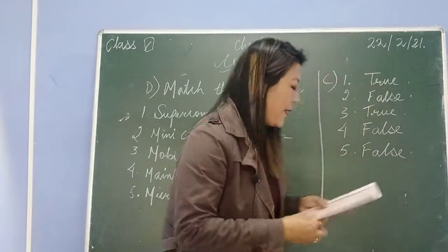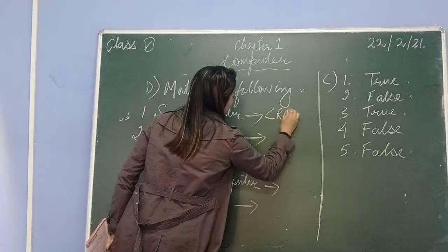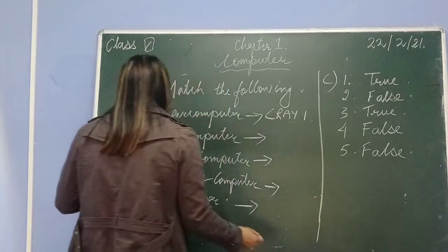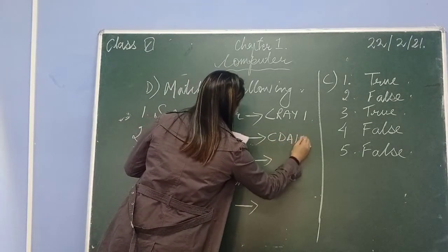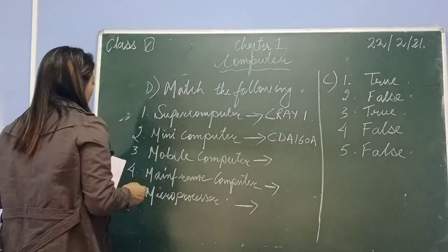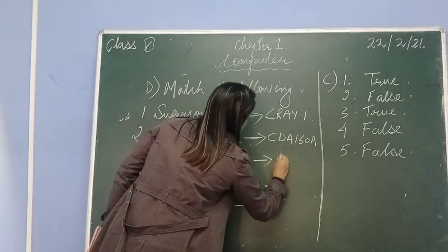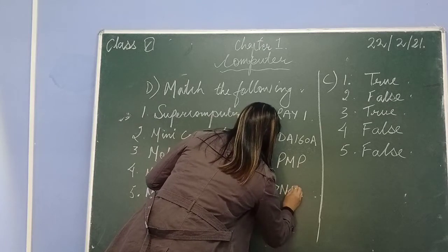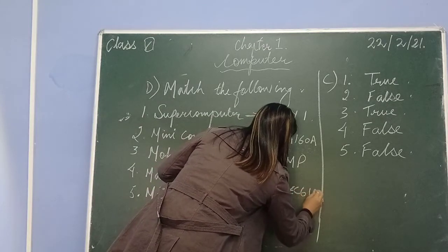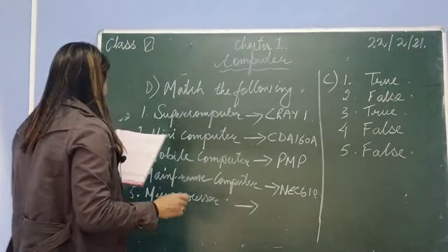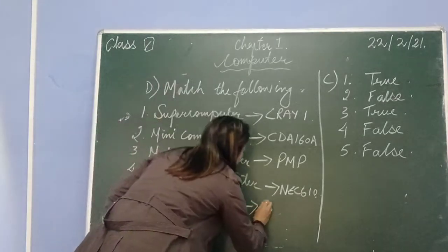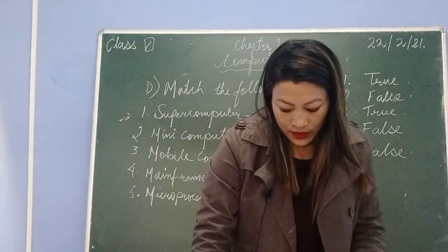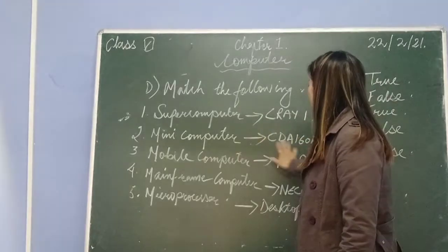For supercomputer, the answer is CRAY 1. For mini computer, the answer is CDA 160A. For mobile computer, the answer is PMP. For mainframe computer, the answer is NEC 610. And for microprocessor, the answer is Varian Dexter. These are the examples of those computers.